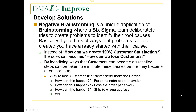For instance, ways to lose a customer: never send them their order. How can this happen? You forget to enter the order in the system. How can this happen? Lose the order paperwork. How can this happen? Ship it to the wrong address, etc. Once you've identified all the possible ways that you can chase away a customer, work your way backwards from these errors to prevent them.